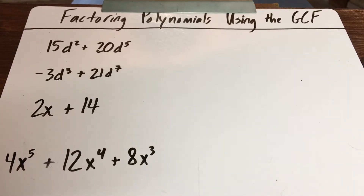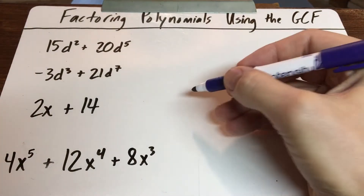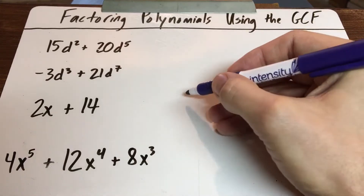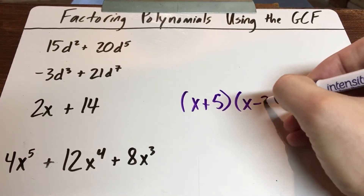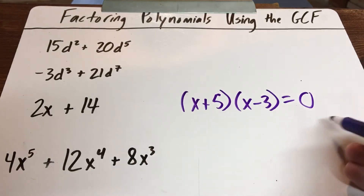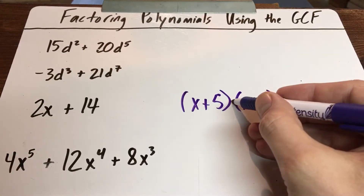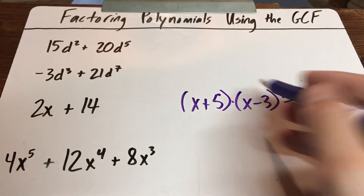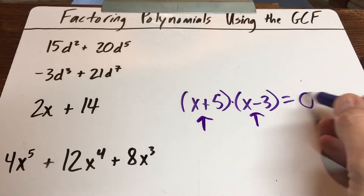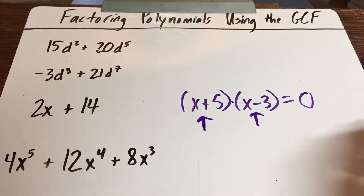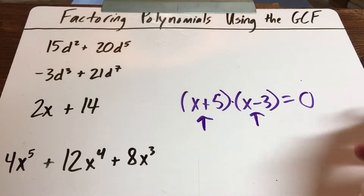In yesterday's video, we were talking about how you can solve equations for polynomials that are written in factored form, where we asked ourselves: the final answer is zero, and the zero product property tells me that in order to have a multiplying problem where the answer is zero, one of the two parentheses—if not both—has to equal zero, because the only way you get zero as an answer to a multiplying question is to have one of the factors equal zero.